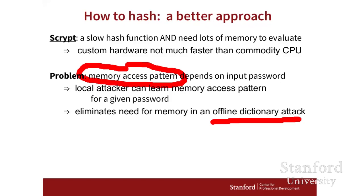So essentially what this says is that scrypt is a wonderful idea in that it requires the attacker to spend a lot of memory to evaluate the hash function. But the minute the attacker has a little bit of side information — in particular, the memory access patterns as the hash function is being evaluated — that allows the attacker to test words in the dictionary without memory, and now we're back to a problematic custom ASIC attack. So the question is: what do we do about that? Is there a better solution?